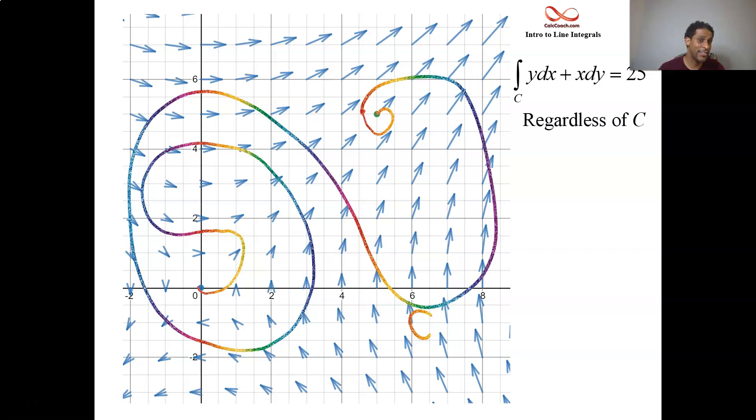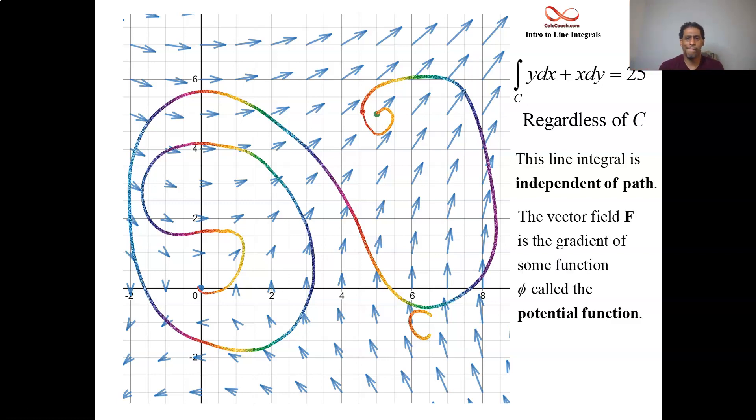The reason... we're going to see that this line integral is independent of path. And the next section we'll look at, we'll have us knowing when that happens, connecting it to the vector field. This happens when the vector field is coming from a function itself, as the gradient of the function. That function that it is the gradient of is called phi, a potential function.